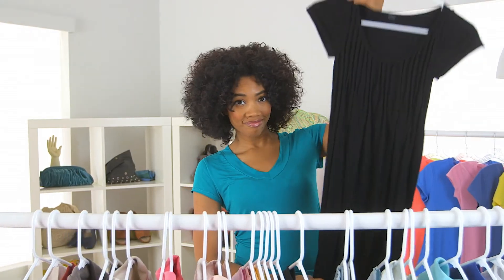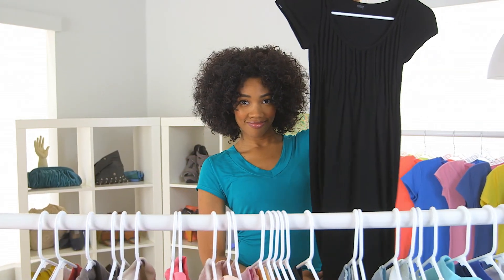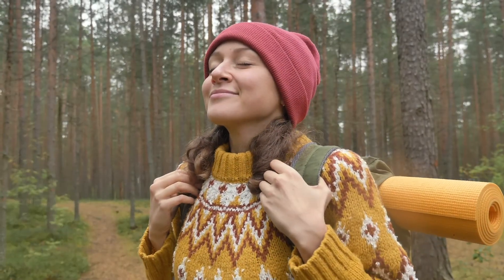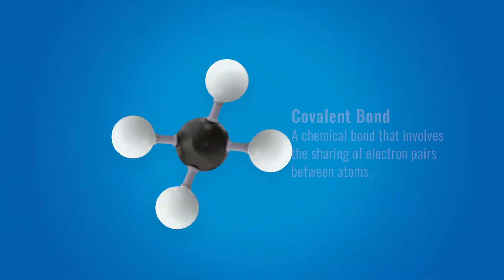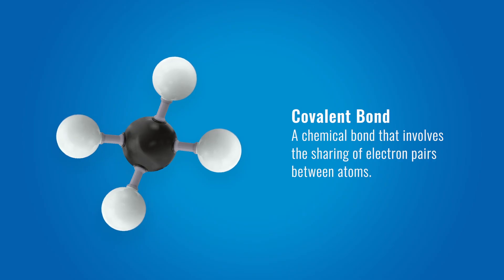Carbon is all around us. It is in the clothes that you are wearing, it is in the air that you are breathing, and it is even inside of you. Carbon is a very versatile element. It's able to bond with up to four covalent bonds of either itself or other elements. Because of this, carbon has very different properties depending on how it's bonded together.